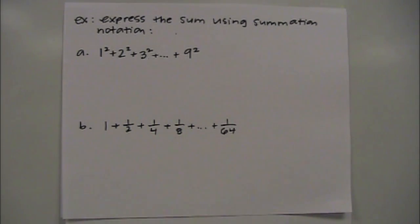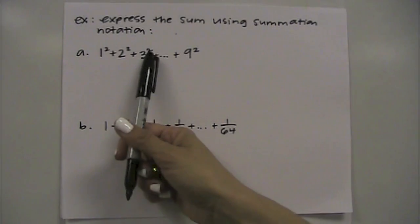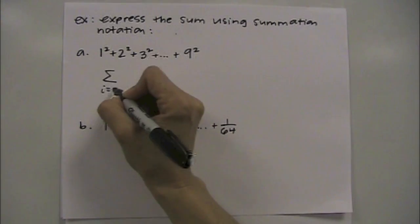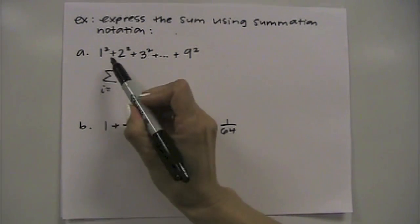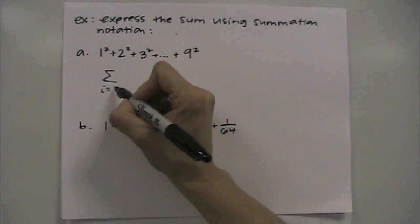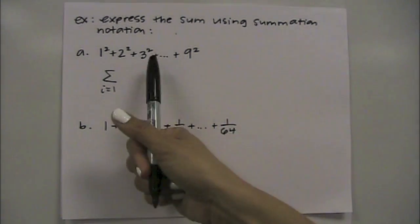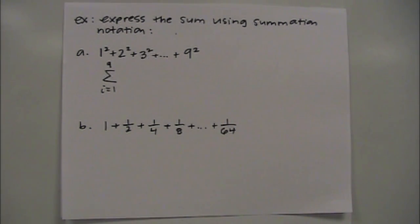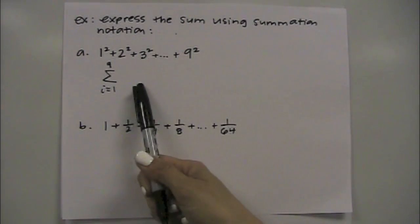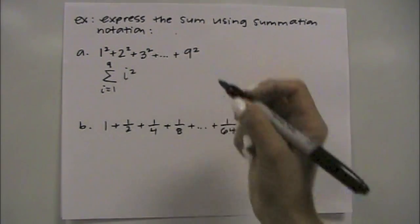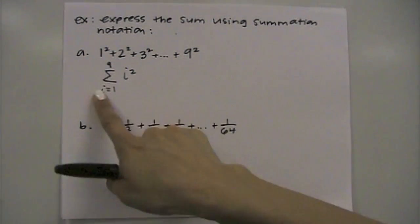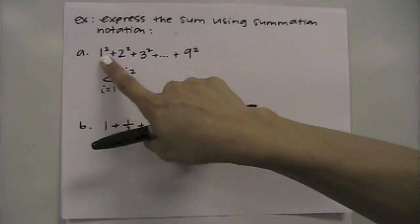This example says express sum using summation notation, so we're going backwards in a sense. You're given 1 squared plus 2 squared plus 3 squared dot dot dot dot plus 9 squared. So we're going to write sigma. We can go ahead and just use i. If you look here, you have 1, then you're plugging in 2, then you're plugging in 3, so our lower index would be 1. It stops by plugging in 9, so your upper index would be 9. And then the formula that essentially we're plugging into would be i squared, because each time it's 1 squared, then 2 squared. And again, the pluses mean that you're using the sigma. So there's your answer for summation notation for this series.